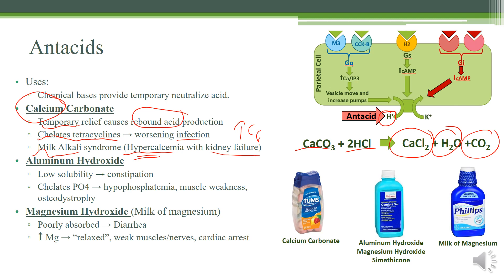Moving on to aluminum hydroxide — it has a hydroxide, so you know it's a base. It has low solubility because of the aluminum, and this will actually cause a whole lot of constipation. Something else that aluminum may do is chelate phosphate, which can cause hypophosphatemia. Phosphate is very important for muscle strength, so if you have low phosphate, you'll experience muscle weakness. Phosphate is also one of the components of bone — hydroxyapatite is actually made of calcium and phosphate — so if you don't have enough phosphate, you can get osteodystrophy.